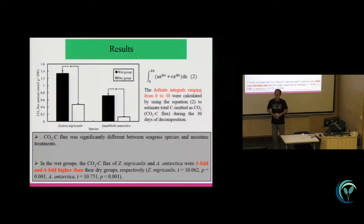And this is the CO2 flux amount for the two seagrass wrack. You can see that for Zostera nigricaulis, it is higher than Amphibolis antarctica. Because Zostera nigricaulis has higher carbohydrate and other soluble organic carbon, it has a higher CO2 flux amount. And also for the wet condition, both seagrasses show higher CO2 flux in the wet condition. This is also the same because the wet condition is beneficial for decomposition.